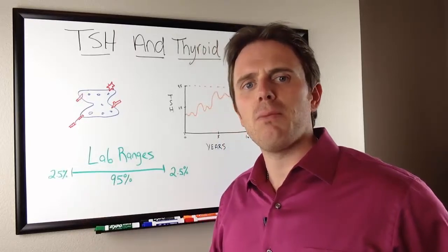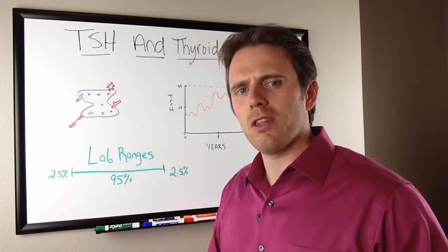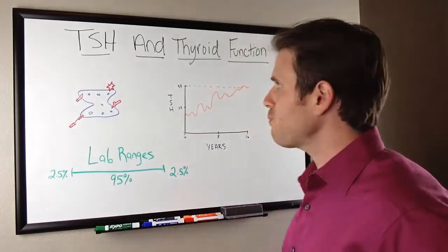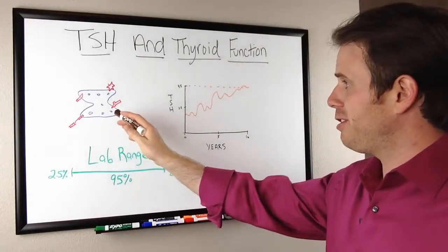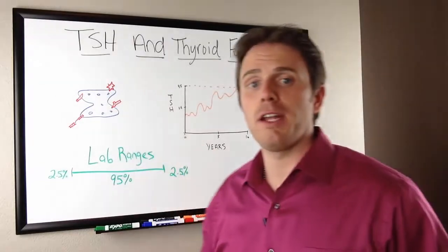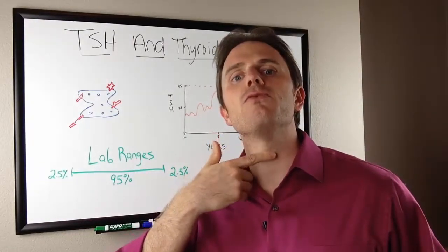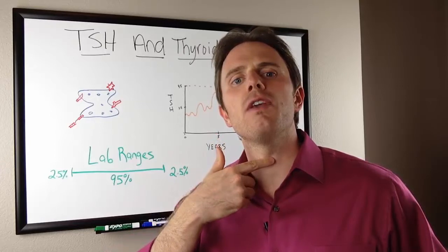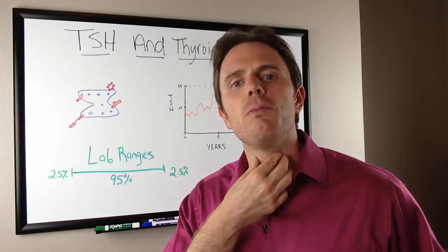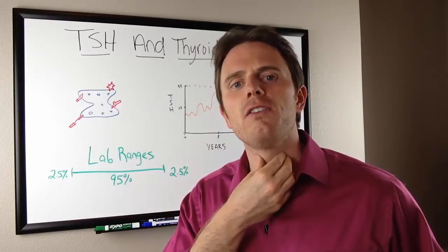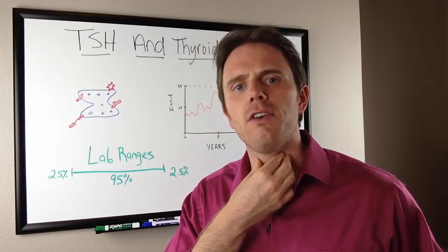Let's break down the main ways in which the thyroid gland dysfunctions. When we look at our thyroid tissue, this is our thyroid gland right here — it sits just below the Adam's apple, just lateral of that, right in this area here, and you can push side to side to feel it.